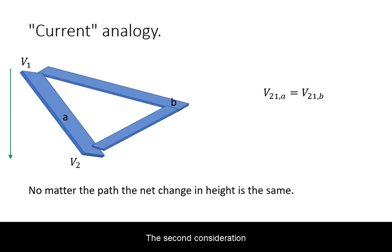The second consideration for parallel circuits is for potential change or voltage. No matter the path taken, the total change in potential must be the same.